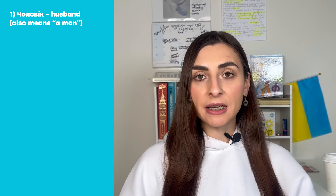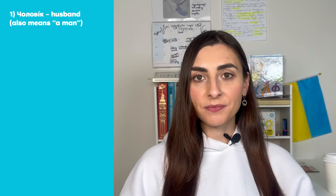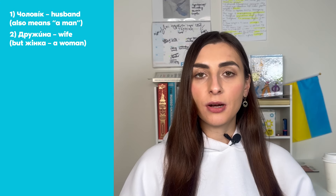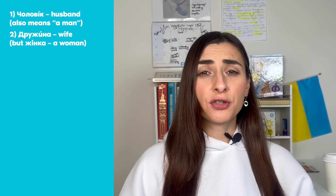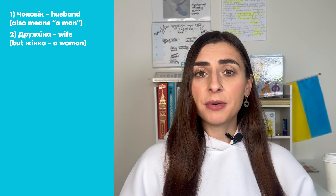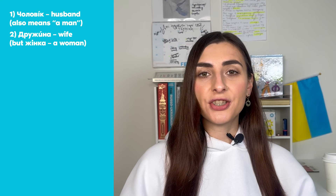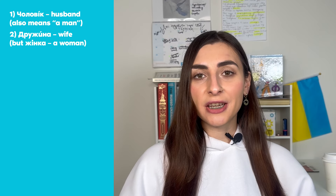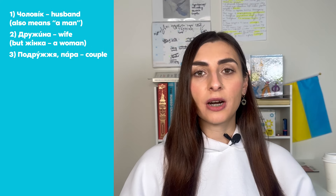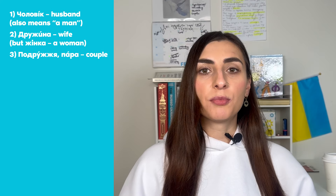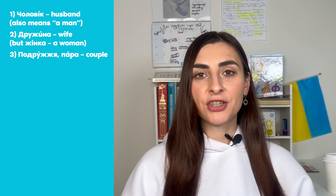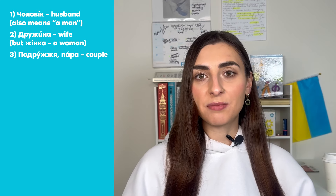Дружина means a wife. But дружина is not translated as 'a woman' — if you want to say 'a woman,' that is жінка. And чоловік — pay attention — this word has a double consonant.